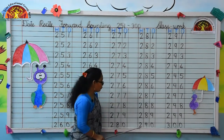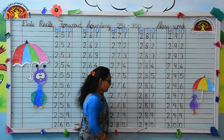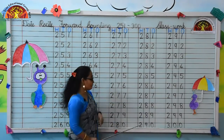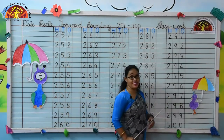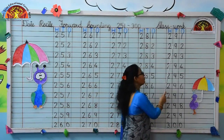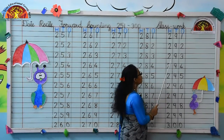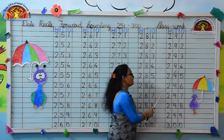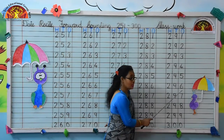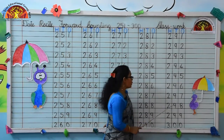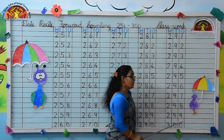Yes, 291. Very good kids, 291. 292, 293, 294, 295, 296, 297, 298, 299.